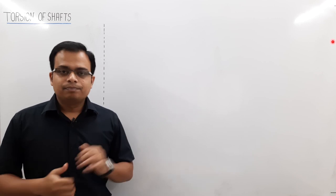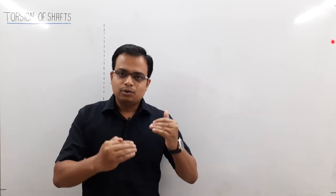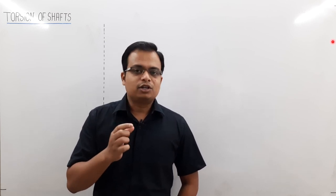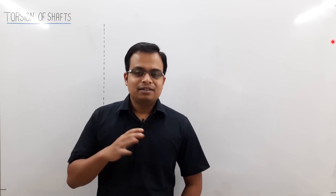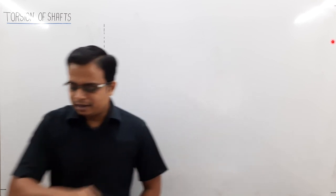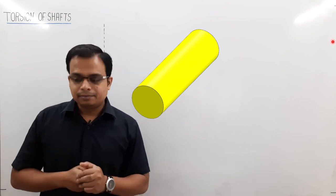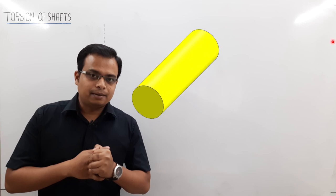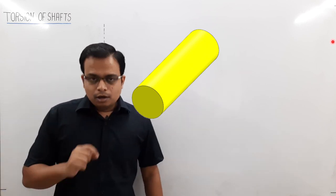We won't be talking about loads; rather we will be concerned with what happens to a shaft when it is subjected to a torque — that is the agenda of today's session. Without further ado, let us begin with an experiment. For this experiment we need a specimen — consider this to be a mild steel circular shaft.